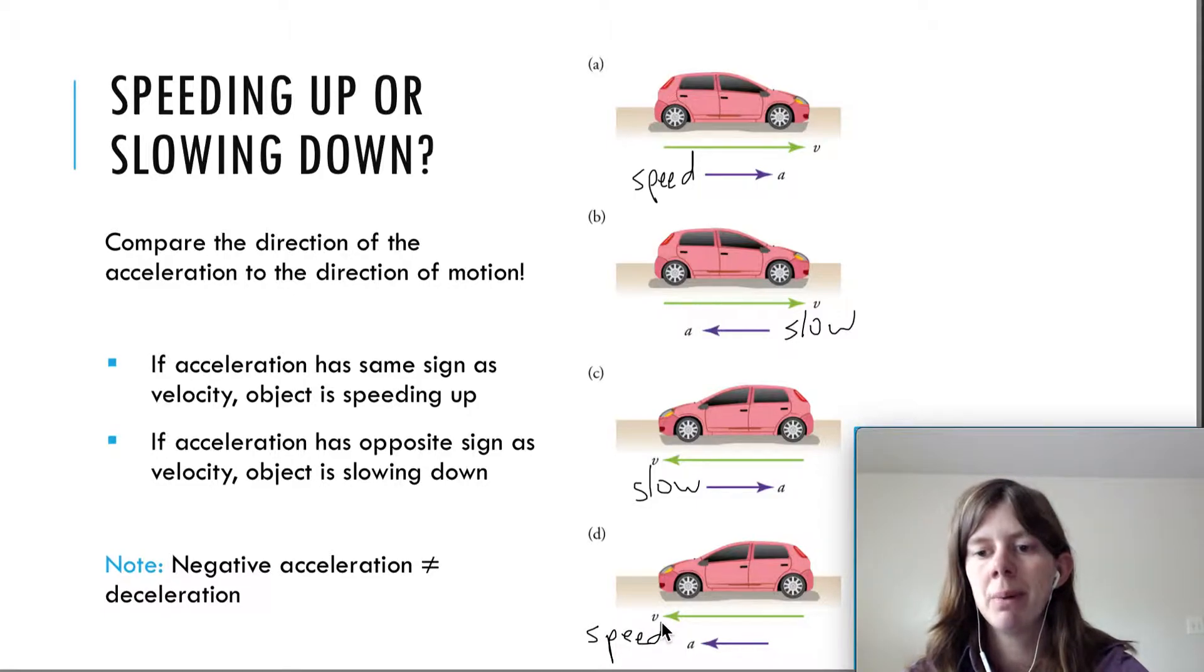So, go back to the Moving Man applet video 6, if this doesn't make too much sense. But, this is just to remind you that you really have to look at both the V and the A to know if you're speeding up or slowing down. You can't just look at an A, for example, over here in the fourth figure, say, oh, A is negative, that means you're slowing down. That's not the case. In this fourth case, you're actually speeding up. And then another note here is that a negative acceleration does not mean a deceleration. When we talk about acceleration in physics, it can mean speeding up or slowing down.